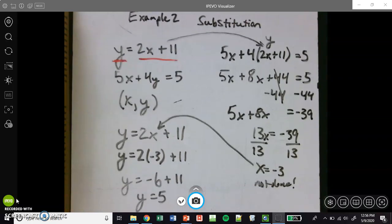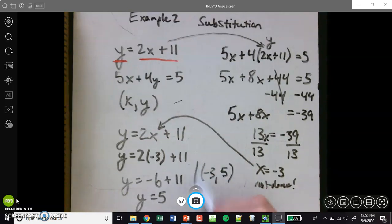So our final answer will be written as an ordered pair, so I'll put that right here. Our final answer will be negative 3 comma 5, because y was 5. That is the answer that you would type into Alex. There you go. Thanks.